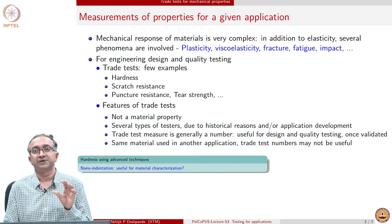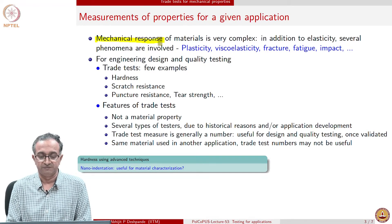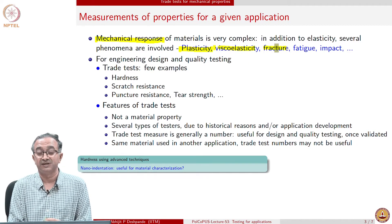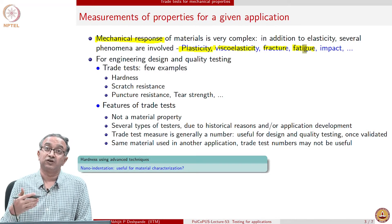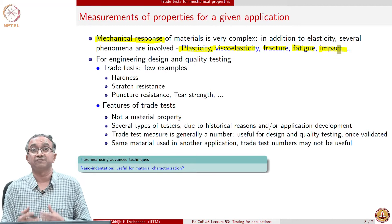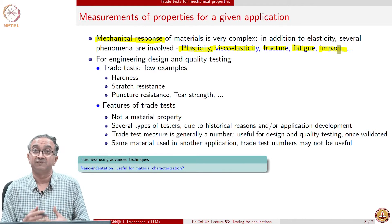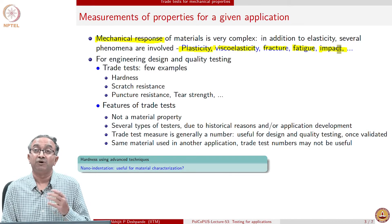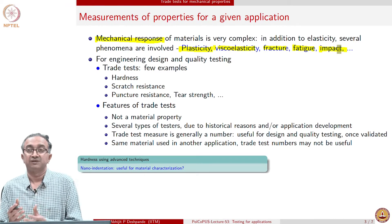Measurement of mechanical properties for a given application can sometimes be very complex because the mechanical response itself is very complex. We know that there could be plastic deformation, there could be viscoelasticity, there could be damage in the form of crack propagation, there could be fatigue which is accumulation of damage under much less loading, and there could be a very high rate of loading which leads to cracks propagating in a very different way. Given these multiple phenomena, it may not always be feasible to correlate mechanical properties measured in the lab with the eventual application.